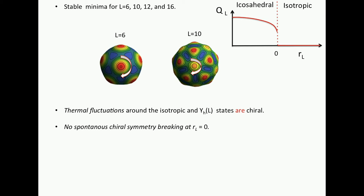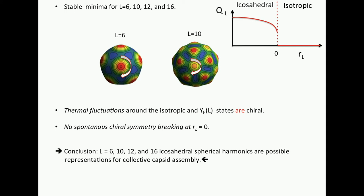So both the isotropic state and these structures are now chiral. With that, there's no spontaneous chiral symmetry breaking, which I would argue shouldn't appear. It's gone. And we can conclude that at least these four icosahedral spherical harmonics are possible representations for viral assembly. They are kosher.